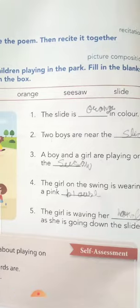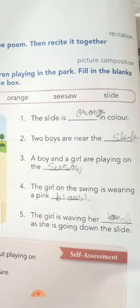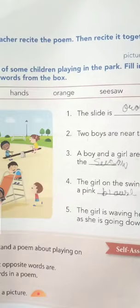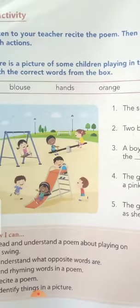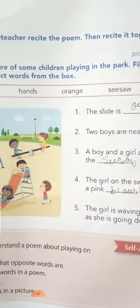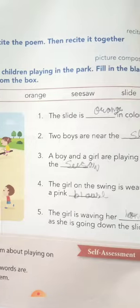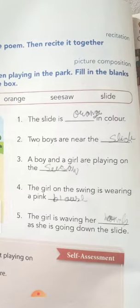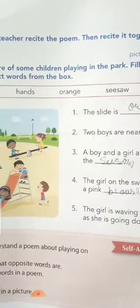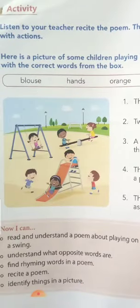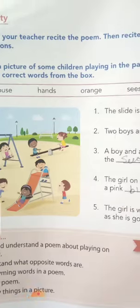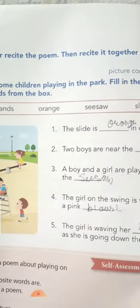Second: two boys are near the dash — two boys slide ke paas khada hai. The answer is slide. A boy and a girl are playing on the dash — seesaw mein kheel raha hai. The answer is seesaw.